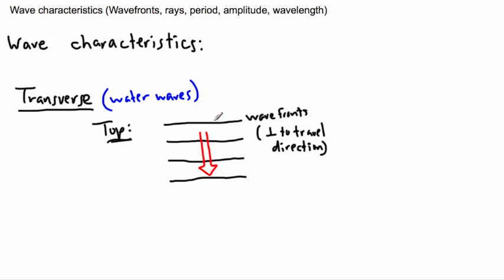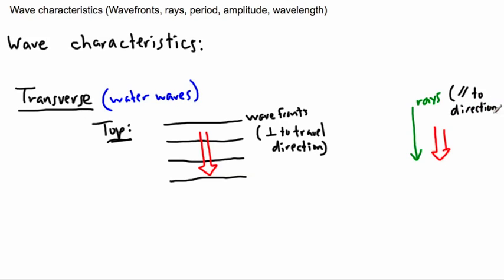That's what it looks like if you're in a plane flying over the ocean — maybe coming in for a landing in Copenhagen. You see these waves that look like straight lines; those are wave fronts. But some people also like to draw rays instead. Rays are parallel to the direction of travel. That's the key difference: wave fronts are perpendicular to travel, rays are parallel. But they're all showing the same idea.